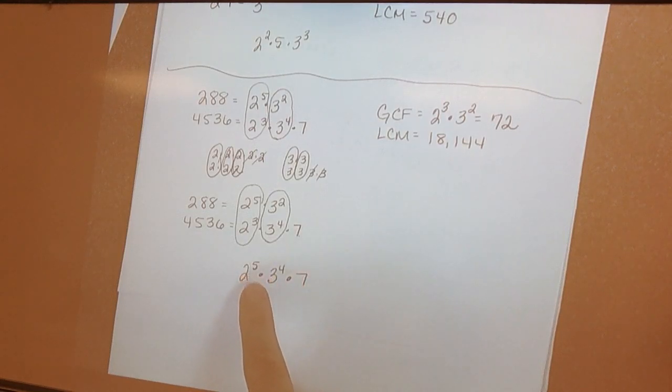So, in order to find the LCM, I would multiply 2 to the 5th times 3 to the 4th times 7, which gives me 18,144.